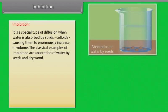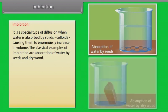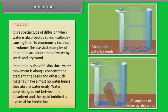Imbibition is a special type of diffusion when water is absorbed by solids or colloids, causing them to enormously increase in volume. The classical examples of imbibition are absorption of water by seeds and dry wood. Imbibition is also diffusion since water movement occurs along a concentration gradient. Seeds and other such materials have almost no water, hence they absorb water easily. A water potential gradient between the absorbent and the liquid imbibed is essential for imbibition.